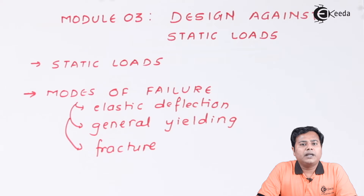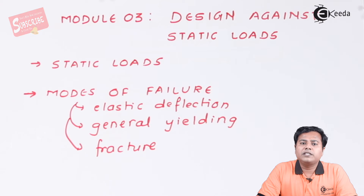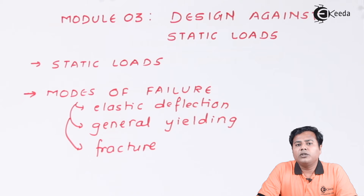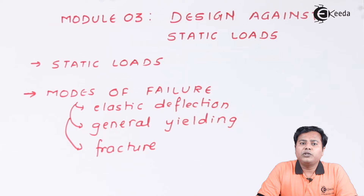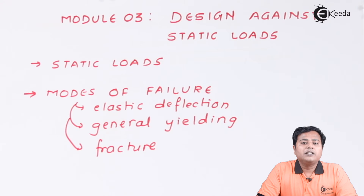There are two types of loads that are generated. One kind of load is your static load and the second is your fluctuating load. In simple language, the load which is constant or which is applied very gradually is your static load. The load which keeps on changing with time is called your fluctuating load. In the next module we will deal with components which experience fluctuating loads, while in the current module we study design for components which experience static loads.